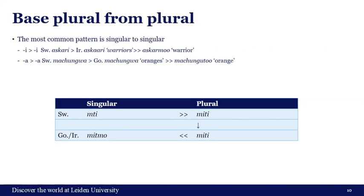Gorwa and Iraqw could also borrow the plural and interpret it correctly as a plural, then derive a singular in the inherited way. So 'miti' (Swahili plural of 'mti', tree) was borrowed and 'mitmo' was derived for one tree. For oranges and warriors, interestingly, 'askari' in Swahili can be either warrior or warriors — singular and plural are the same. In this case, Iraqw got it as a plural and derived the singulative 'askarmo' for one warrior.